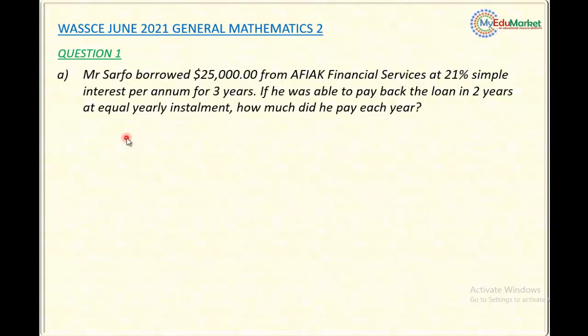This is WASSCE 2021 question number one. The question reads: Mr. Safo borrowed $25,000 from AFIAK Financial Services at 21% simple interest per annum for three years. If he was able to pay back the loan in two years at equal yearly installment, how much did he pay each year?